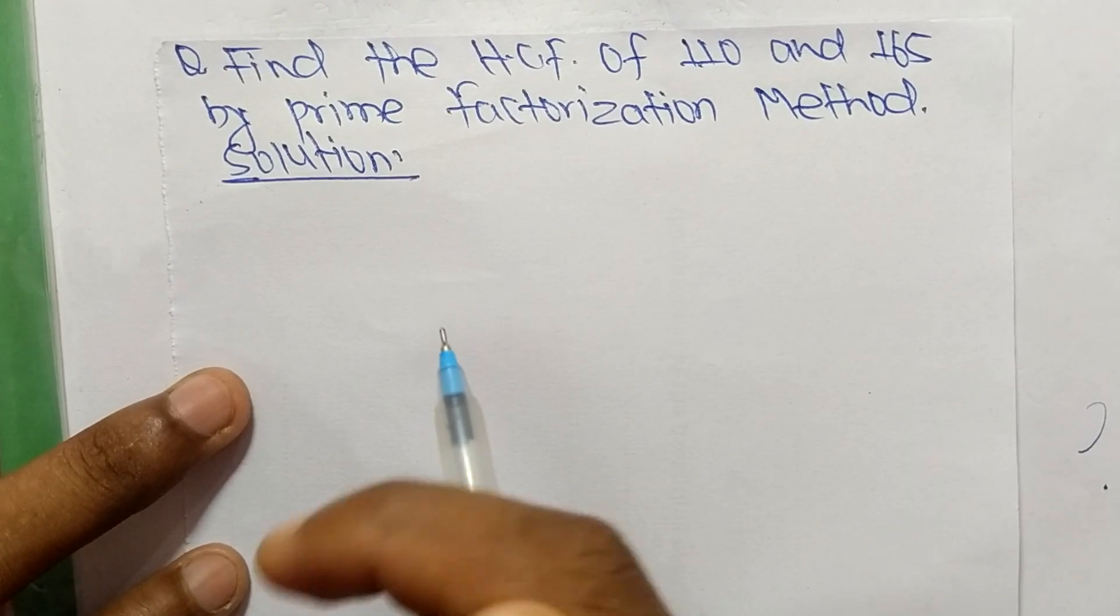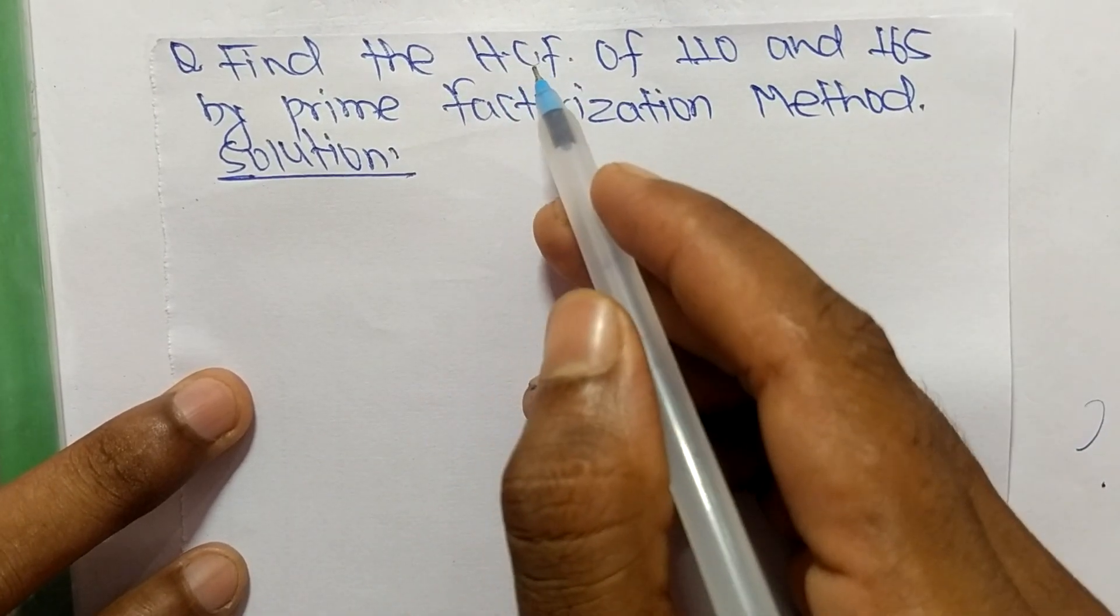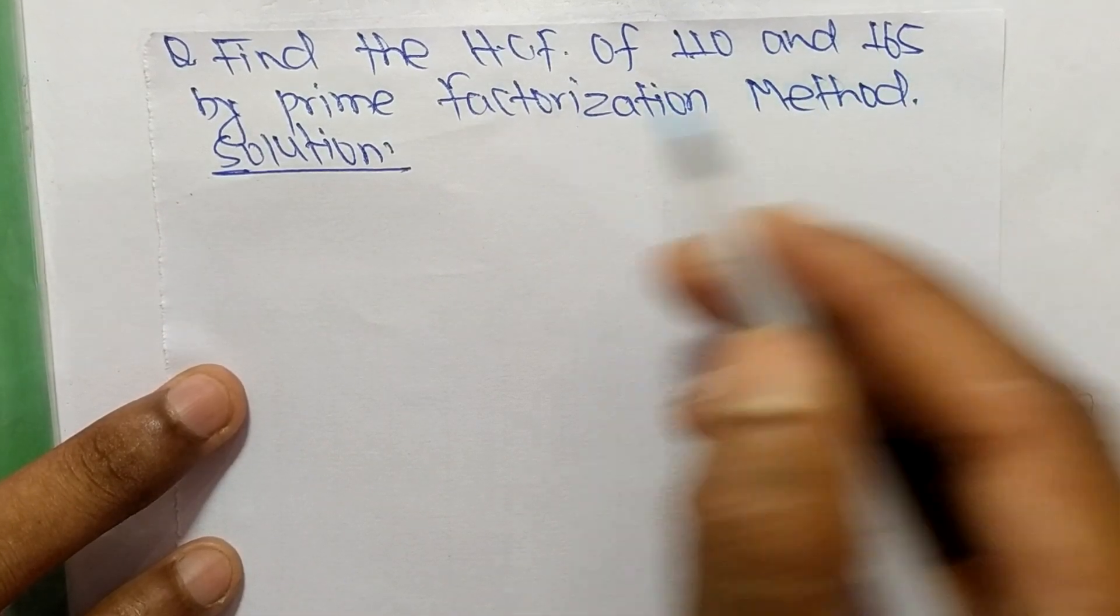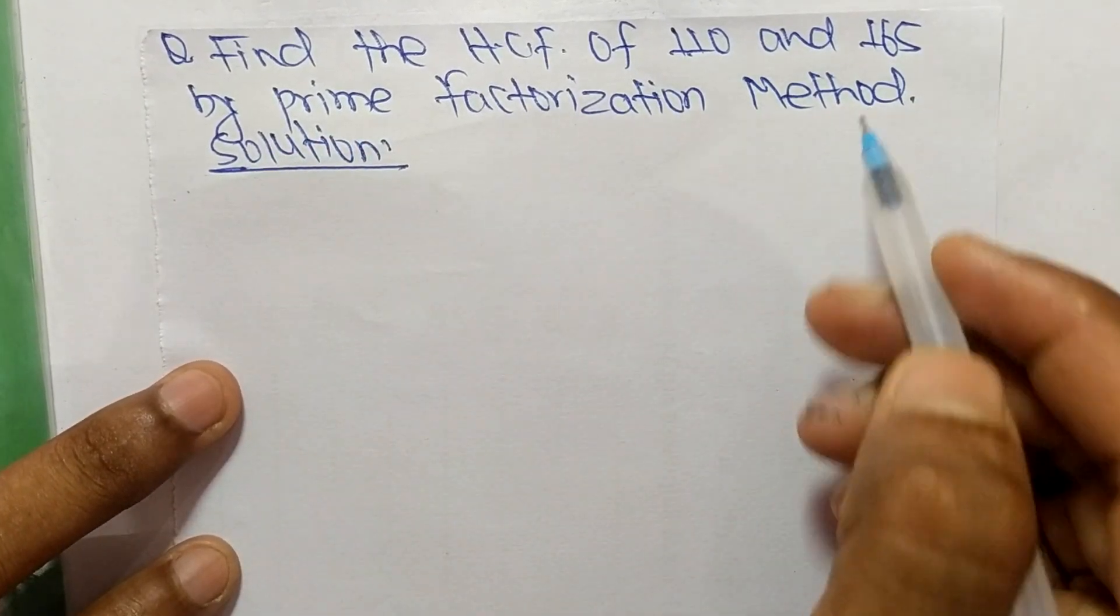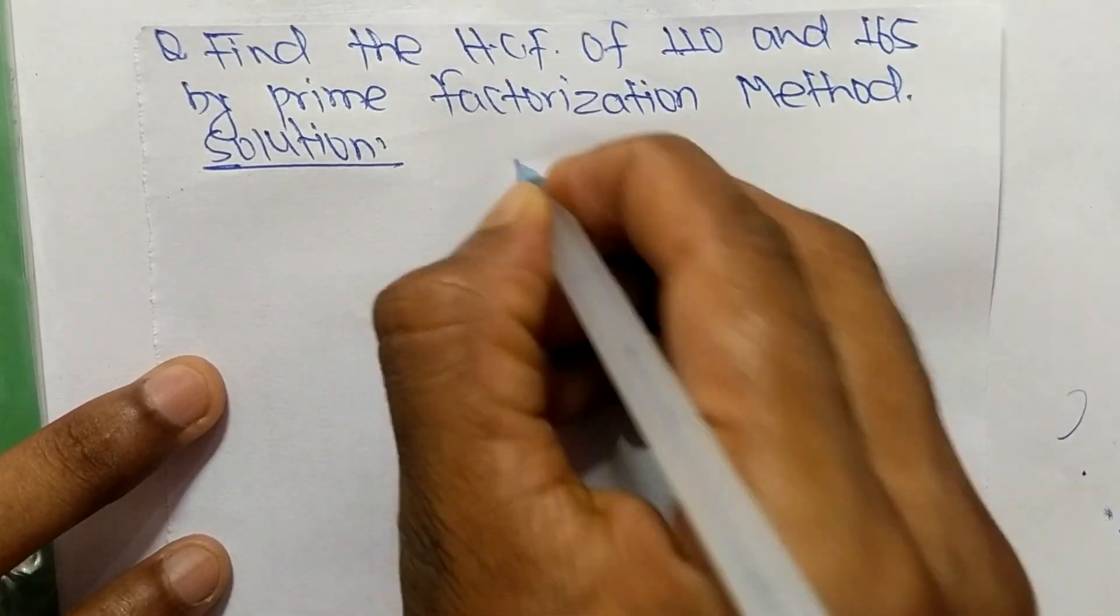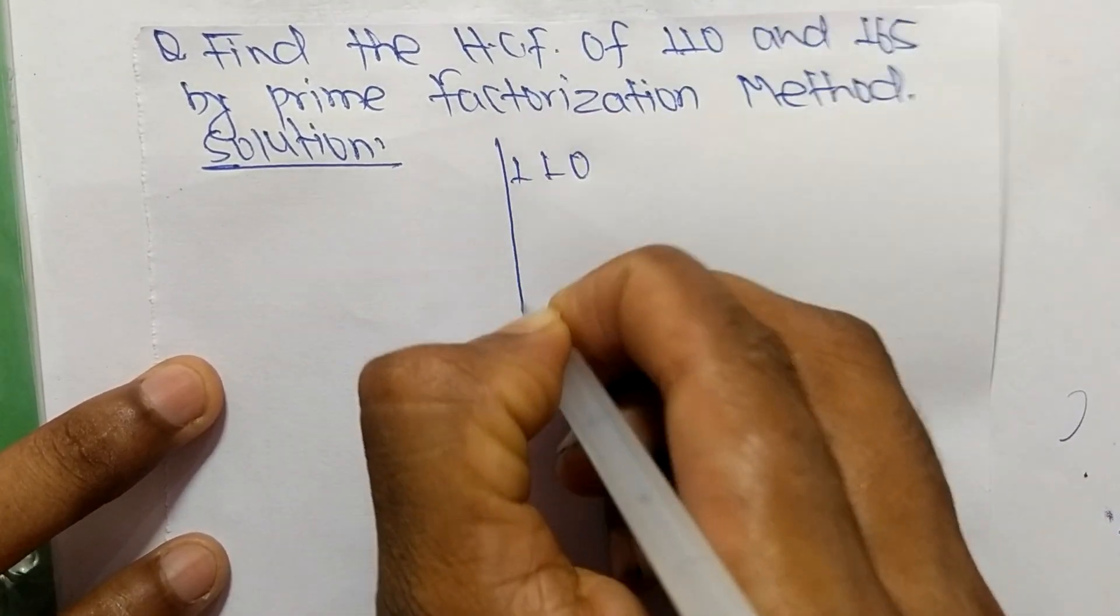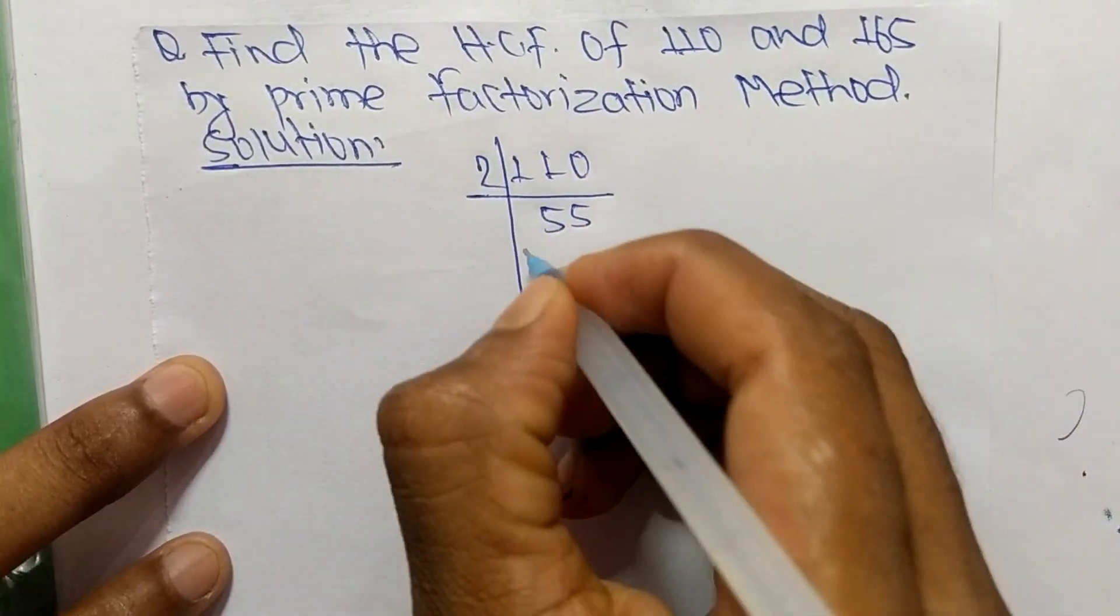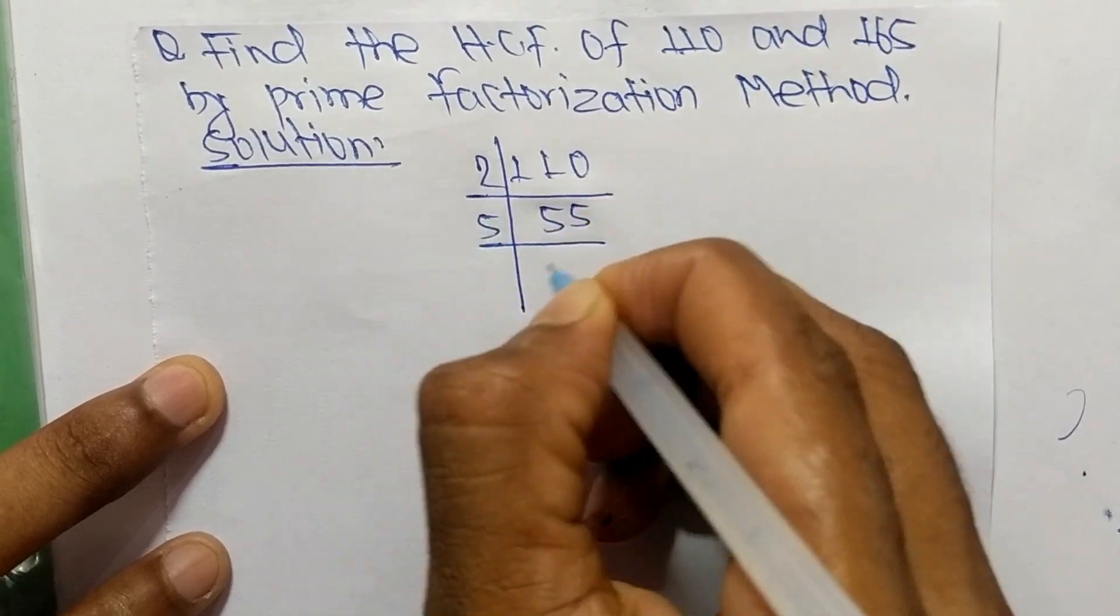Today in this video we shall learn to find the HCF of 110 and 165 by prime factorization method. First, we find out the prime factors of 110. It is 2 times 55 equals 110.